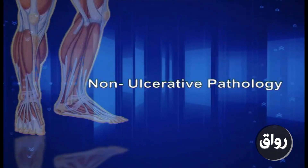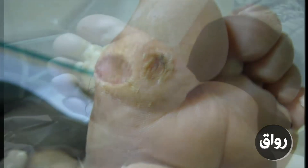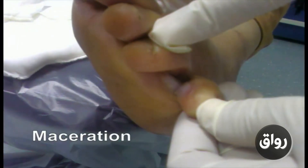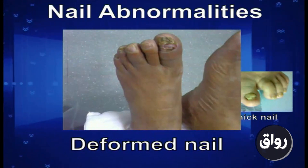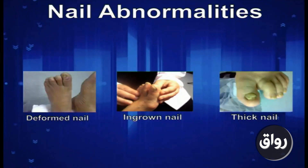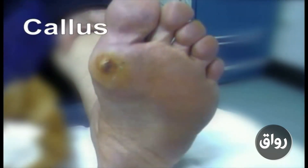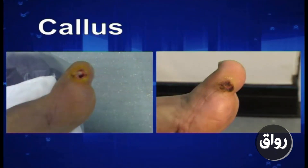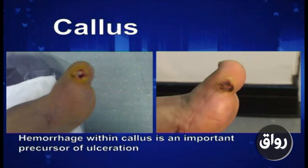Non-ulcerative pathology: there is no trivial lesion of the diabetic foot, as minor lesions can lead to ulcer. These include bulla, maceration, nail abnormalities such as deformed nail, ingrown nail, thick nail, and callus. Callus is a warning that dangerously high mechanical forces are acting on the foot and occurs on sites of high pressure. Hemorrhage within callus is an important precursor of ulceration.